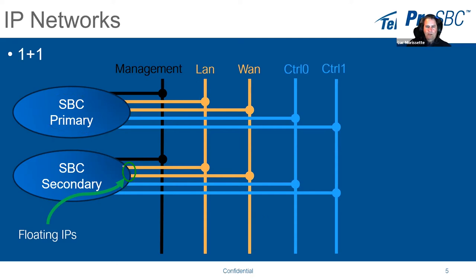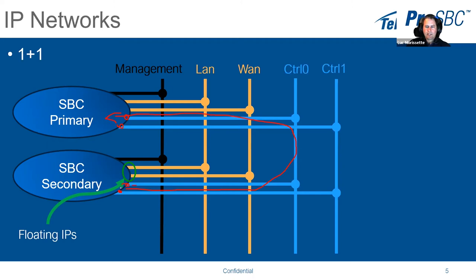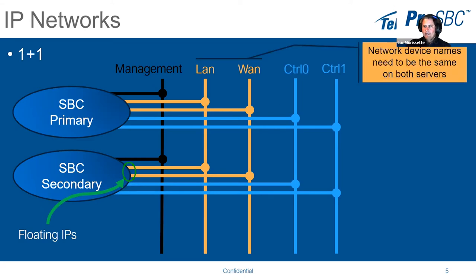For a 1+1 system you need a control network — two separate interfaces that are allocated on the systems and connect to the secondary device, with continuous communication between the two systems to keep them in sync. The configuration database is synced and all applications talk to each other. Control 1 is for redundancy. The network device names — such as LAN 0 — must be the same on both servers.